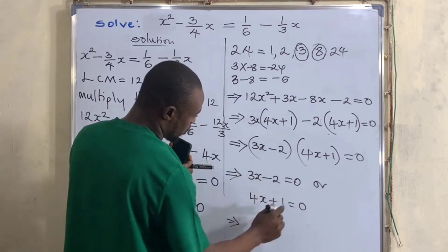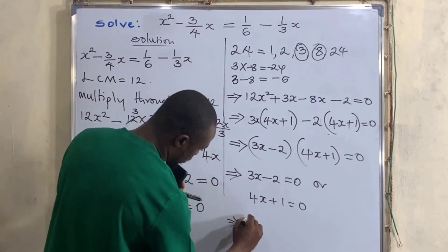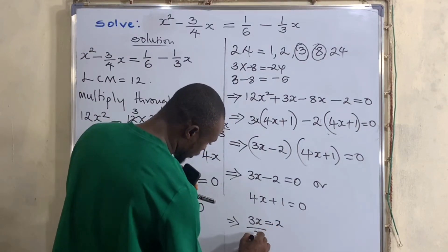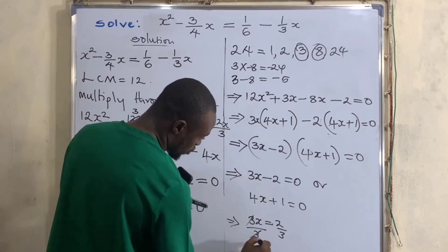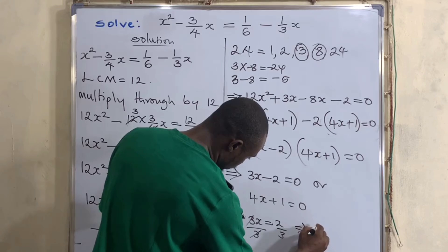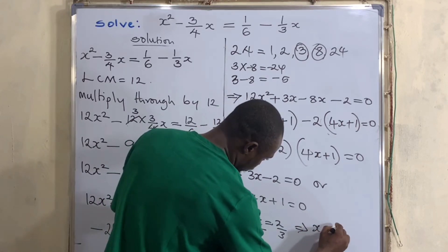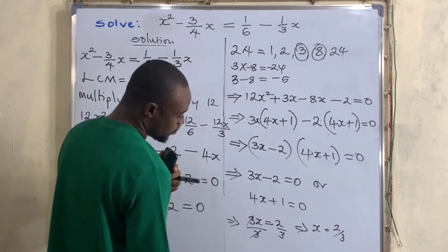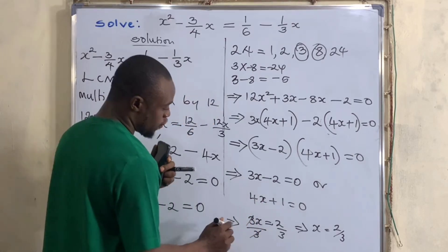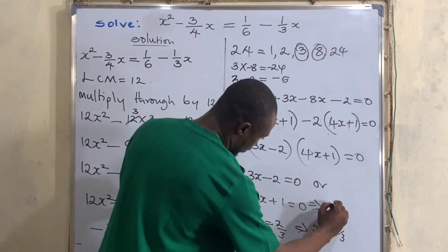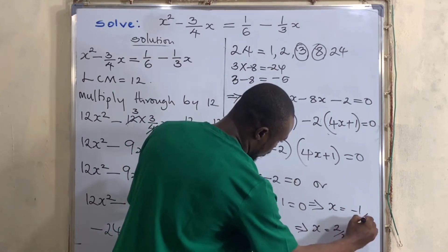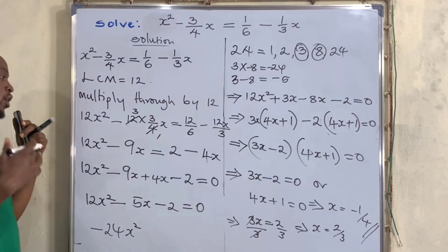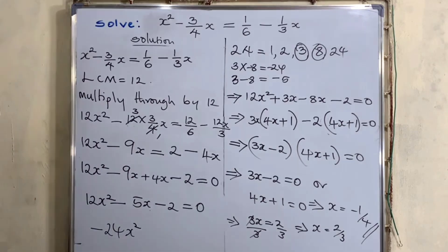This means either 3x minus 2 equals 0 or 4x plus 1 equals 0. For the first: 3x equals 2, divide both sides by 3, giving x equals 2 over 3. For the second: 4x equals minus 1, giving x equals minus 1 over 4. Please subscribe to my channel for more. Thank you.